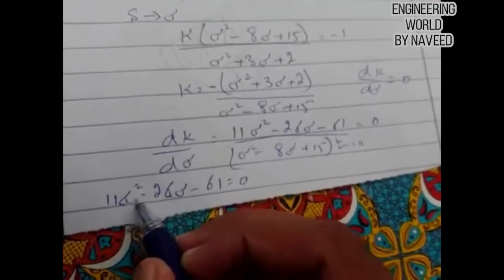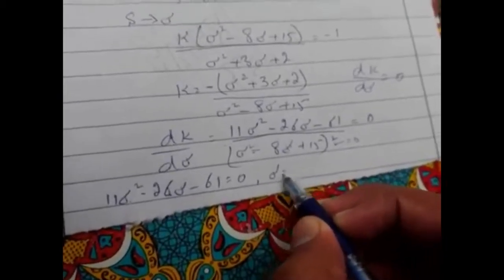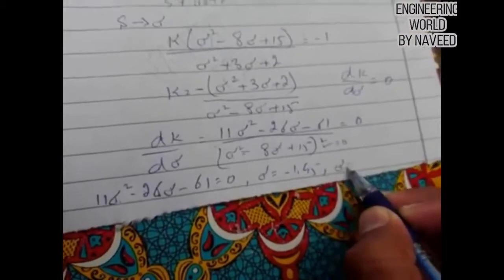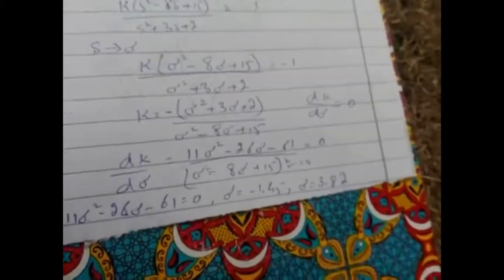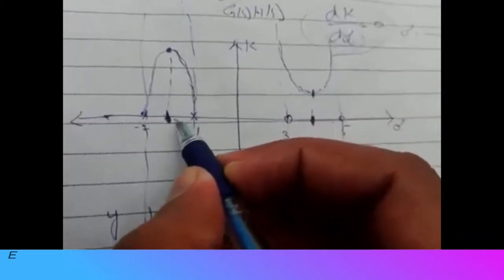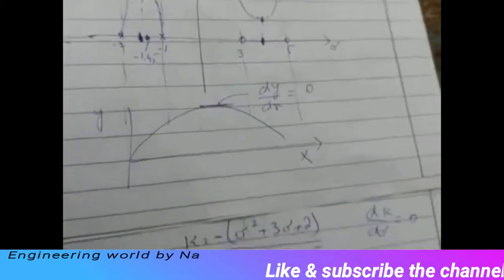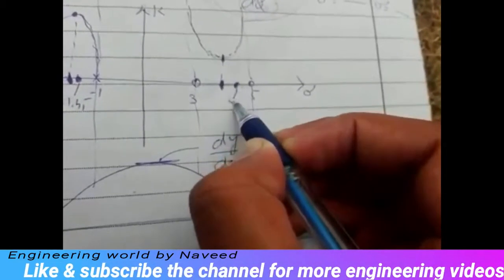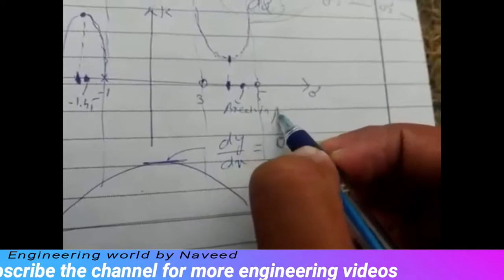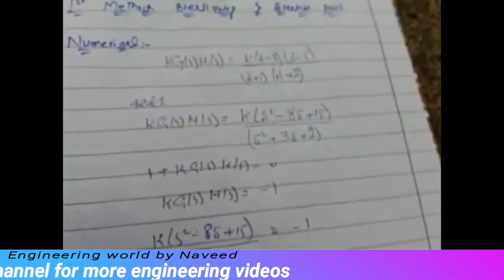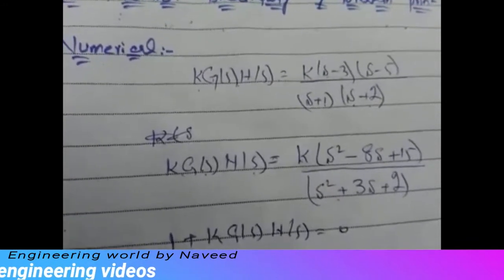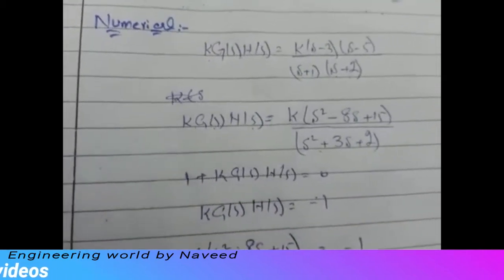Solving this second-degree equation gives two solutions: sigma equals minus 1.45 and sigma equals 3.82. As discussed in the previous video example, sigma equal to minus 1.45 is your breakaway point, and sigma equal to 3.82 is your break-in point. This is how you find the breakaway and break-in points. In the next video, I will discuss the second method, which is the transition method.